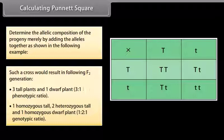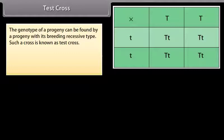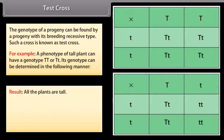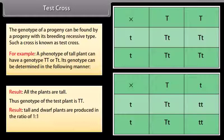Test cross. The genotype of a progeny can be found by crossing it with a homozygous recessive type — such a cross is known as a test cross. For example, a phenotypically tall plant can have a genotype of TT or Tt. Its genotype can be determined as follows: in the first case, all plants are tall, so the genotype of the test plant is TT. In the second case, tall and dwarf plants are produced in a ratio of 1:1, so the genotype of the test plant is Tt.